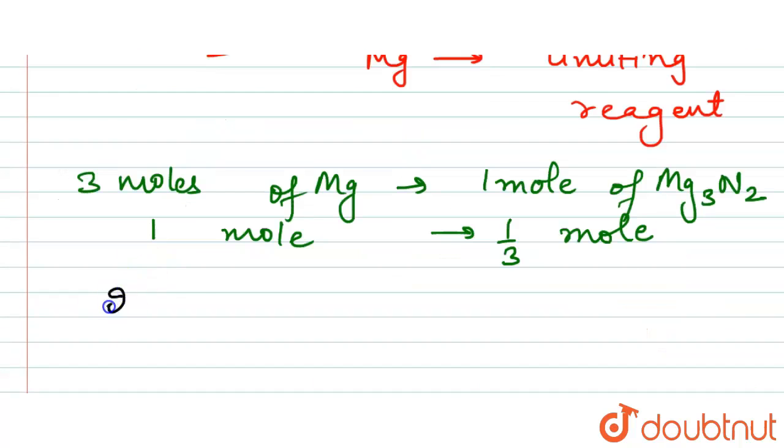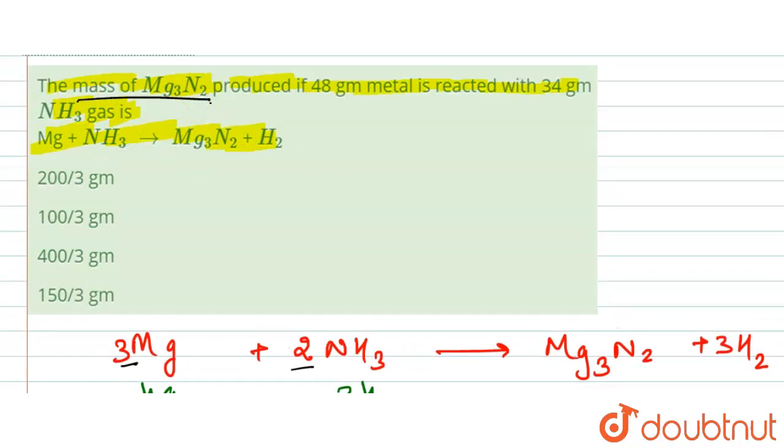When we have 2 moles of Mg, then what we will have is 2 upon 3 moles of the Mg3N2. We have got the moles.